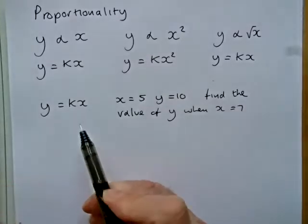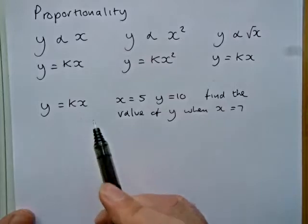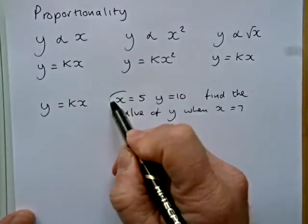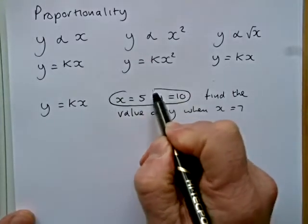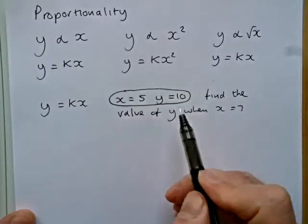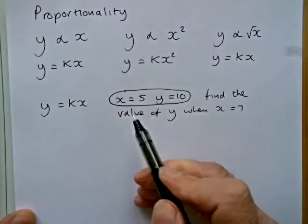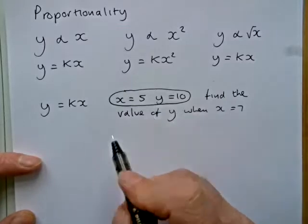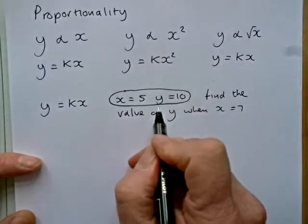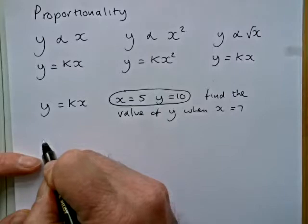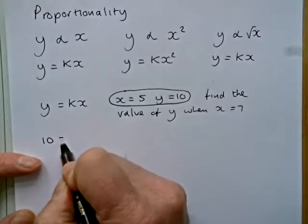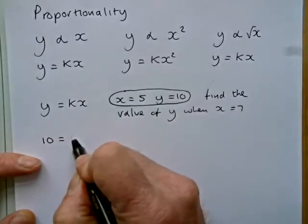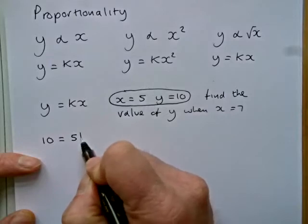So to do this, the first thing you have to do is to find k with the information that you're given here about x and y. You can't do the second part of the question until you've worked out k. So you substitute in the value of 10 for y and 5 for x to put the 5 in front of the k.